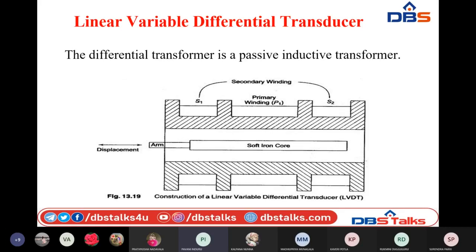Now let us discuss how the LVDT functions — how it produces equivalent voltage for the application of displacement. There is an arm to which we connect the body that creates displacement in the soft iron core. As discussed with the inductive transducer, the same operation is used in LVDT. Whenever the body connected to the arm produces displacement, it places the soft iron core either towards the left side or right side. If no displacement is created, the soft iron core remains at the center.